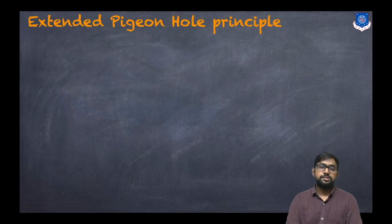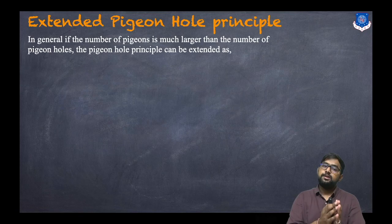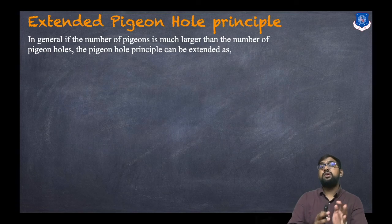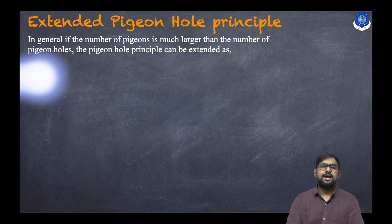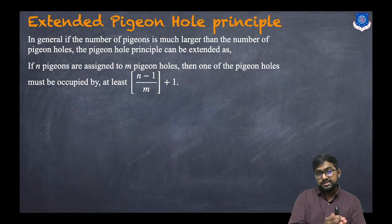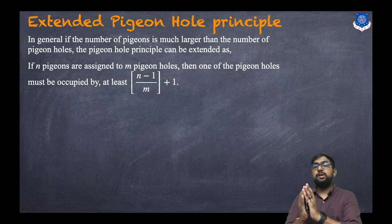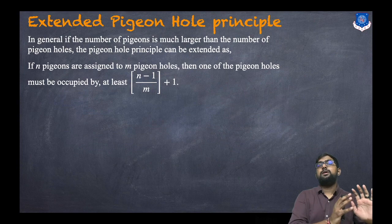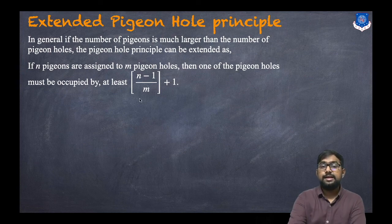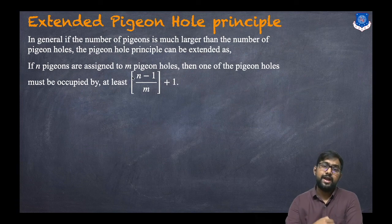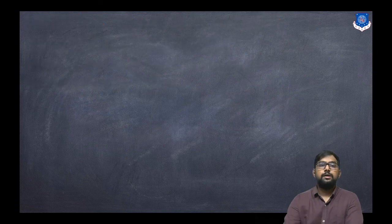Now, the extended pigeonhole principle: if the number of pigeons is much larger than the number of pigeonholes, then if n pigeons are assigned to m pigeonholes, one pigeonhole must be occupied by at least the integer part of (n minus 1) divided by m, plus 1.